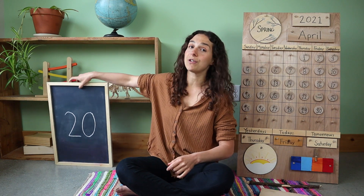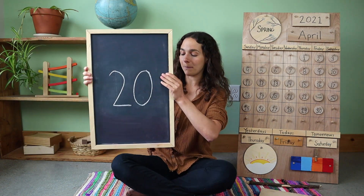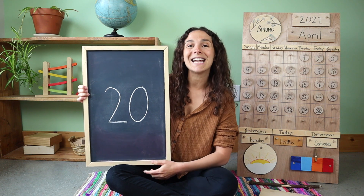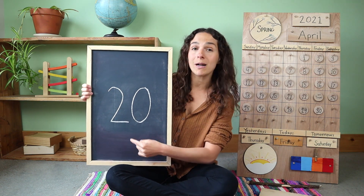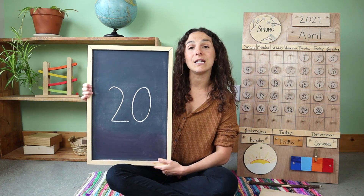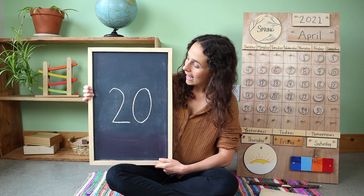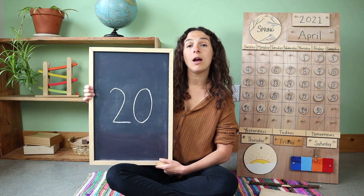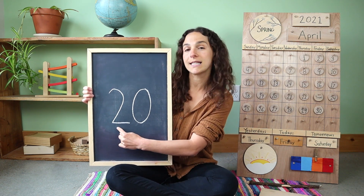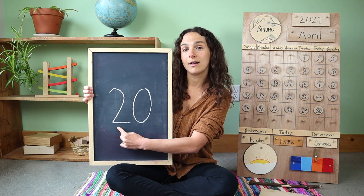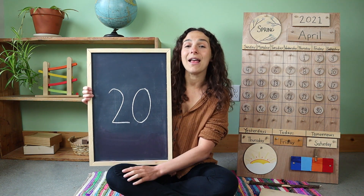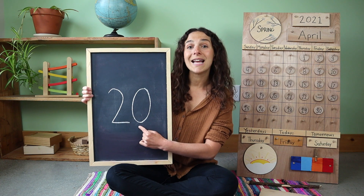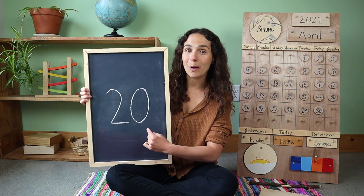After the number 19 comes the number 20. The number 20 is the number of the week. And 20 is also a double digit number. First you write this number — two — and then you write this number — zero. 20.